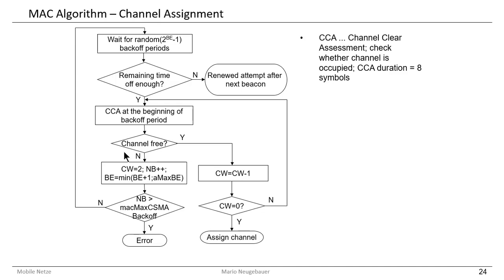In this part of the algorithm you see a path to check if the channel is free, then count down the contention windows three times. If successfully counted down to zero, we are able to assign the channel and send our message from the reduced function device to the coordinator. This is an independent part of the algorithm executed in each reduced function device that wants to send a message and must pay attention to other participants in the network.